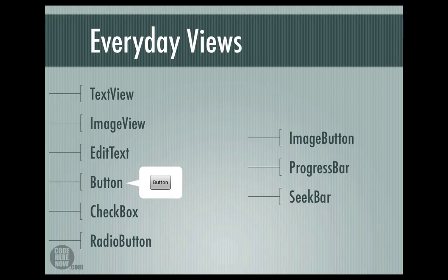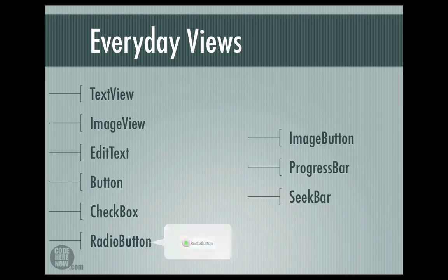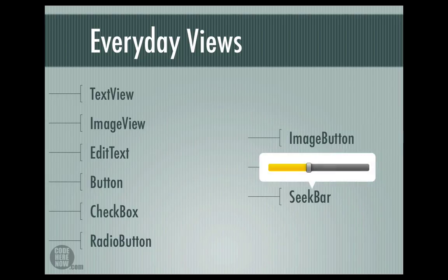Buttons are usually used to handle click events from the user. Checkbox allows you to select many options among all available options. A radio button, unlike the checkbox, restricts the selection to one option among several options. The image button is just like a button — it allows you to handle click events, but on a button you display text while on an image button you display an image. The progress bar visually shows the amount of progress on any given task, usually good for showing progress when downloading a file or showing the score of a student. The seek bar looks almost like the progress bar but has a thumb that lets users select a value within a given range.